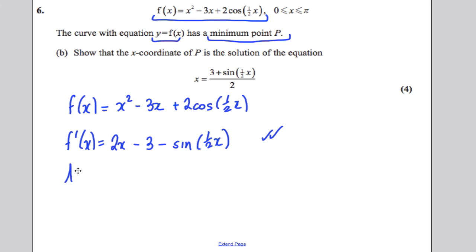Then you have to say what you're doing. At a minimum, you can't just start sticking zeros in everywhere. You have to say, at a minimum, f dash of x is equal to 0. Tell the examiner what you're doing. So solve 0 is equal to 2x subtract 3 subtract sine of a half x.